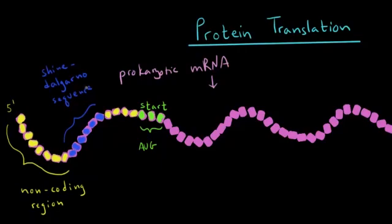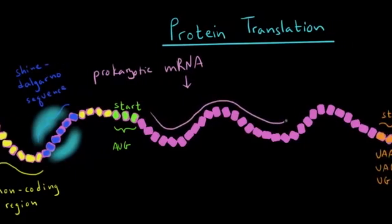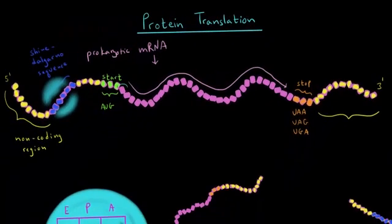After the non-coding region, we have the Shine-Dalgarno sequence shown here in blue. That's actually the part on the mRNA that the ribosome recognizes and will bind to. Then we have another non-coding region, which can be a little bit larger or smaller. And then finally we hit the start codon, AUG, that tells our ribosome to begin translating. The ribosome will read all of these codons and put together the corresponding polypeptide. I'm going to circle all of the codons so we get a picture of how many amino acids are going to be in this polypeptide chain.